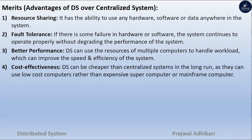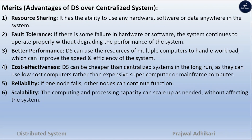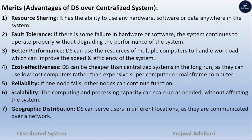Cost effectiveness: Distributed systems can be cheaper than centralized systems in the long run as they can use low-cost computers rather than expensive supercomputers or mainframe computers. Reliability: If one node fails, then other nodes can continue to operate the system. Scalability: The computing and processing capacity can scale up as needed without affecting the system performance. Geographic distribution: Distributed systems can serve users in different locations as they can communicate over the network.